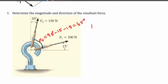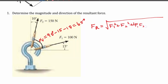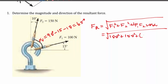Now let us find out the resultant force. FR = √(F1² + F2² + 2·F1·F2·cos α). Substituting the values: FR = √(100² + 150² + 2×100×150×cos 65°). Solving this, we get the resultant value FR ≈ 212.6 N.